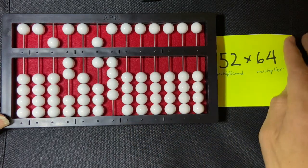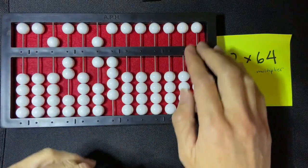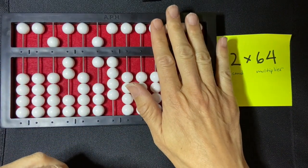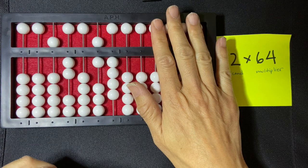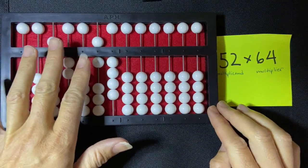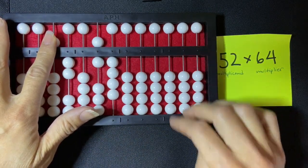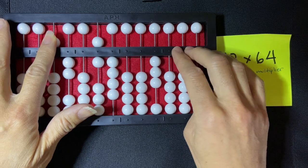All right, so now I'm going to start by multiplying 60 times 50. I'm going to be setting my product here on the right-hand side of my abacus, just like I'd set a number normally. 60 times 50 gives me 3,000. Can I set it directly? Yes, I can. So I set that directly.